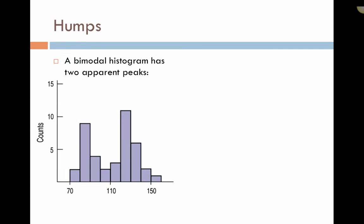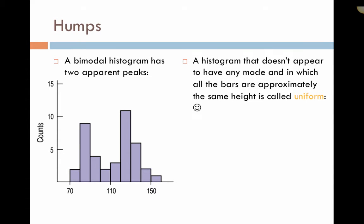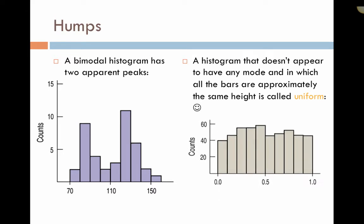A histogram that is bimodal has two apparent peaks. Here we can see there is one mode right here and one mode right here. This gives us two distinct peaks, making this histogram bimodal. A histogram that doesn't appear to have any mode, meaning all the bars are approximately the same height, is called uniform. Here we have no actual apparent mode and most of the bars are roughly the same height, so that would be considered uniform.